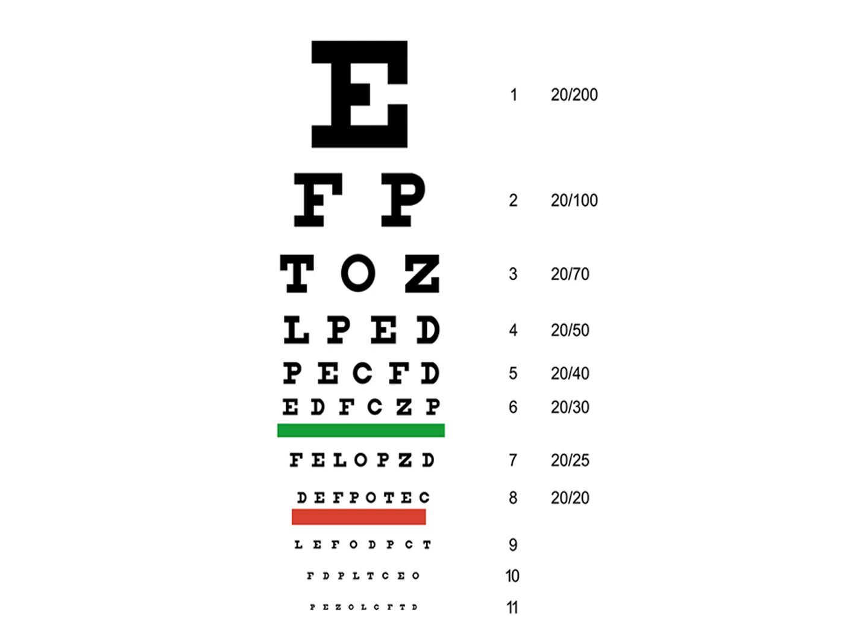Each row of the Snellen chart represents a level of visual acuity based on two numbers. The first number describes the chart's distance from the patient — almost always 20 feet. The second number indicates how clearly a person reads a line from 20 feet away. With 20/20 vision, a person can clearly read the line that any average person could read from that distance. With 20/50 vision, a person must be 20 feet away to read a line that someone with normal vision could read from 50 feet. The Snellen chart makes it easy to prescribe corrective lenses.